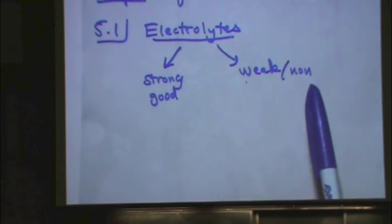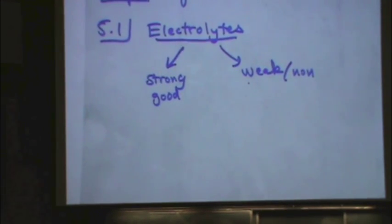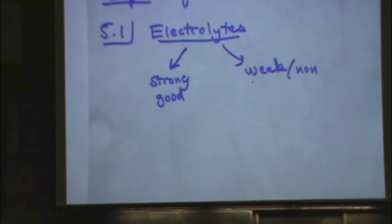What your textbook does is separates these into three categories. The strong or good ones, and then the weak ones, and then the non. But practically speaking, I put the weak and the non-electrolytes together. Because effectively they produce the same results for us.